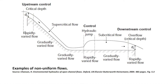This schematic gives examples of non-uniform flows. At locations of flow controls, such as weirs, outfalls or hydraulic jumps, the flow velocity and depth vary rapidly, and this is defined as rapidly varying flow. Between these flow controls, the water depth and velocity still vary, but at a much more gradual rate, and we define these regions as gradually varied flow.